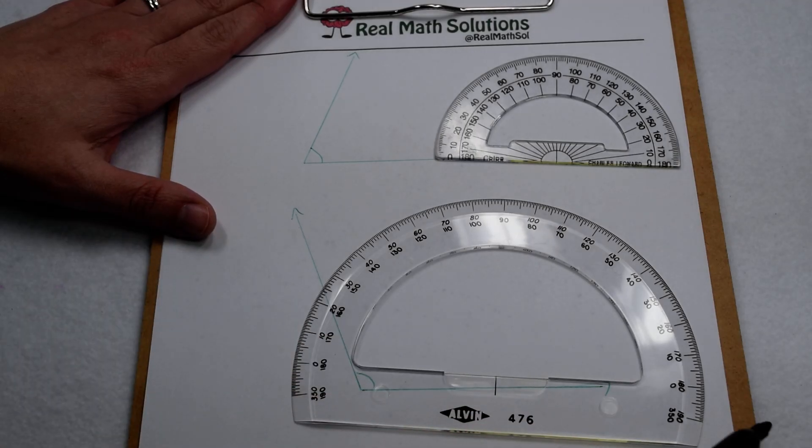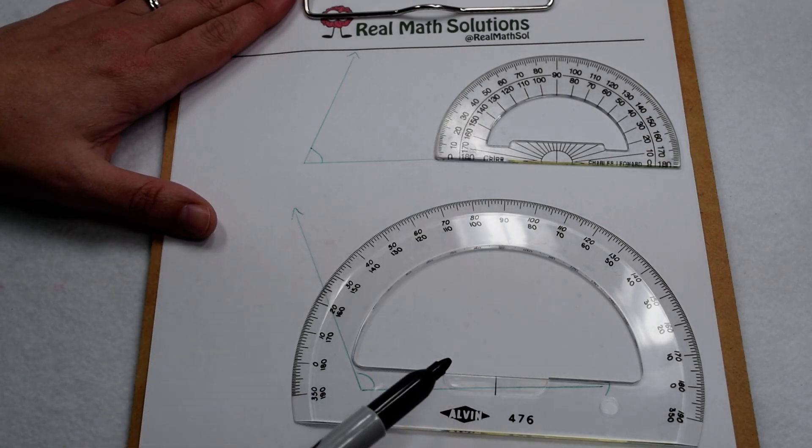It came up on our YouTube channel today: How do you measure an angle if your protractor doesn't have a hole in the middle? Well, luckily we had a couple lying around.